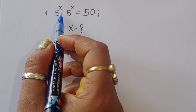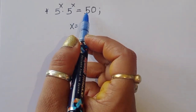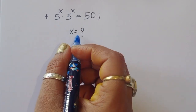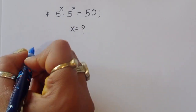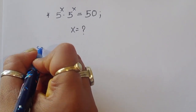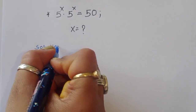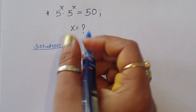The question is: given 5^x times 5^x is equal to 50, we have to find out the value of x. Let's see the solution — how we can find out the value of x in this equation.